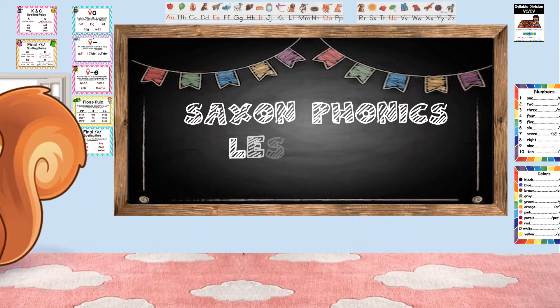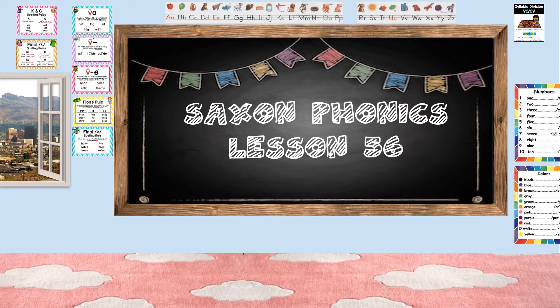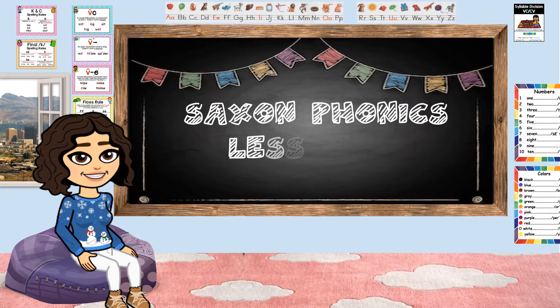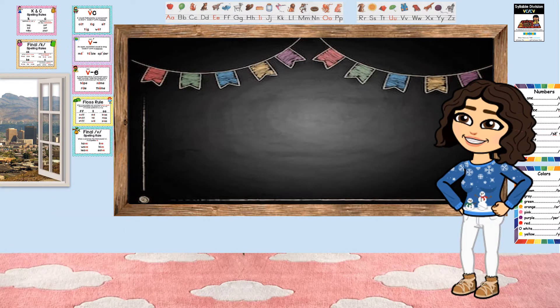Let's go ahead and climb into our Saxon Phonics lesson for today. Welcome back, boys and girls. I'm going to say some words and I want you to listen for the sound in the final position. Table, thimble, bubble. What sound do you hear in the final position? Listen carefully. Table, thimble, bubble. We hear the 'bull' sound at the end of those words.